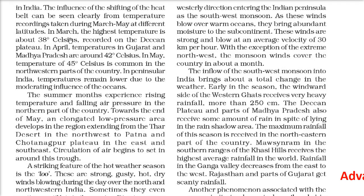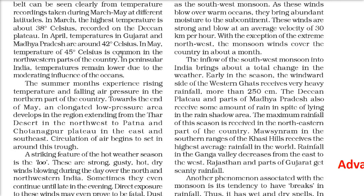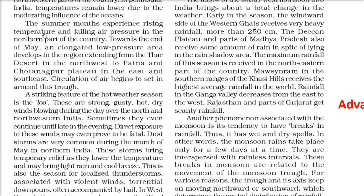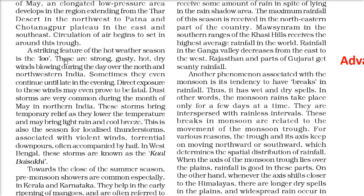In the hot weather season, temperatures rise to about 38 degrees Celsius in March and in the Deccan plateau in April. In Gujarat and Madhya Pradesh, temperatures go up to 42 degrees in April, and in May they may reach 45 degrees, mostly in the northwestern part of the country. The peninsular region stays cooler due to moderating oceans. As temperatures rise, air pressure falls and towards the end of May an elongated low pressure area develops from the Thar desert in the northwest to Patna and Chota Nagpur in the east, around which circulation of air begins.